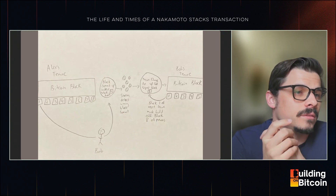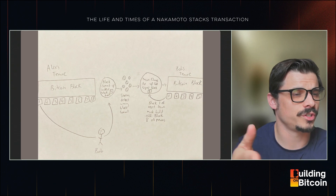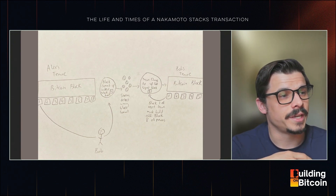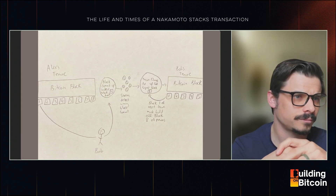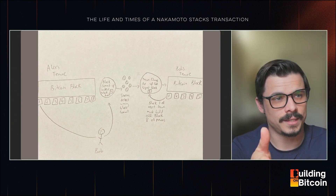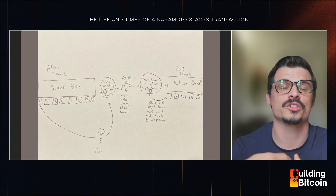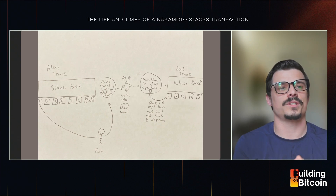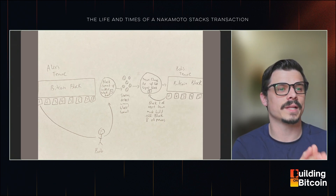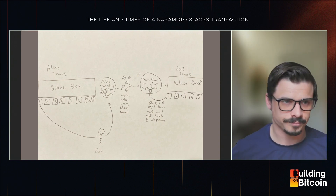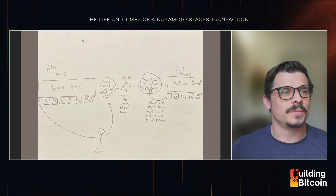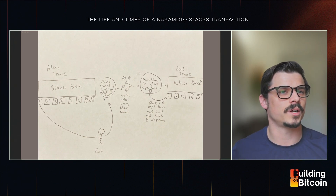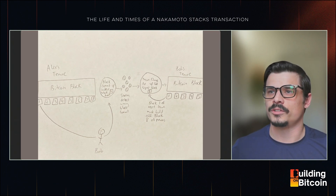Alice continues mining Stacks blocks until the end of her tenure, at which point a tenure change takes place and we switch to Bob's tenure. During that tenure change, Alice has mined eight Stacks blocks. Bob takes Stacks block number one from Alice's tenure, takes that index block hash, and adds it to his block commit transaction on the Bitcoin chain. The stackers detect that winning block commit, initiate a tenure change transaction including Alice's last signed block (block number eight), and Bob must build on top of that block.